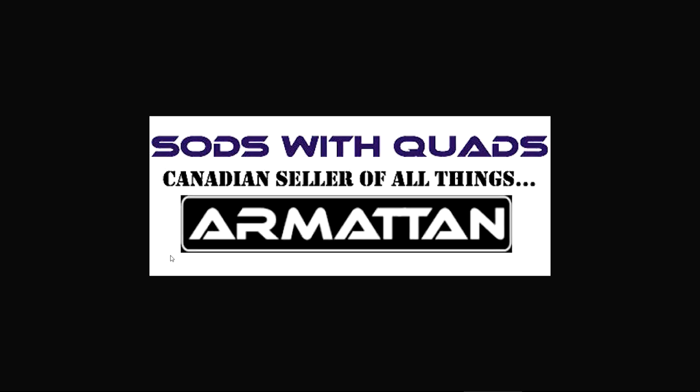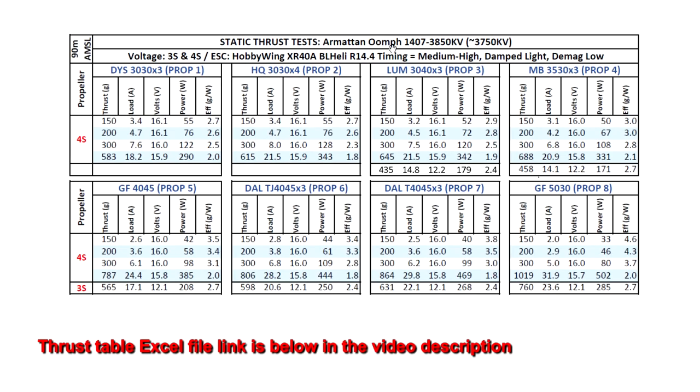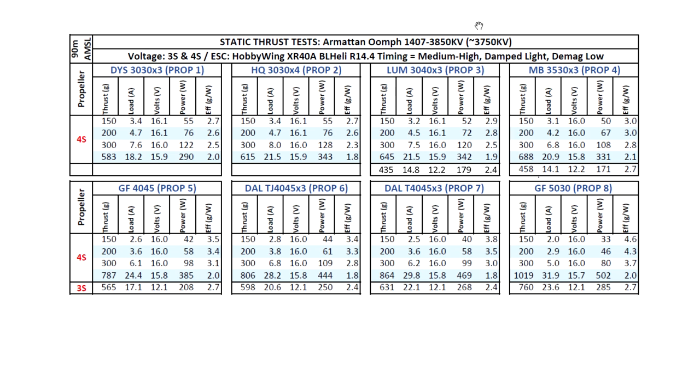Let's look at the results from the thrust test. First of all, I'd like to thank Sots with Quads, Canadian seller of all things Armatan. Thank you for donating this Oomph 1407 motor for testing. So let's look at the results here on the thrust test for the Oomph 1407 3850kV. The motor actually tested at about 3750kV, a little bit lower, but that's not a bad thing. It might actually be a good thing, because the lower KV will actually have a little bit more torque than the higher KV. So I think that's not bad at all. And the results really show that it's not hampering the performance. So that's actually better that it's lower KV in my opinion.